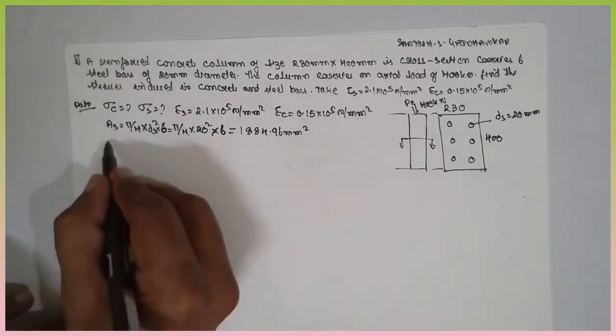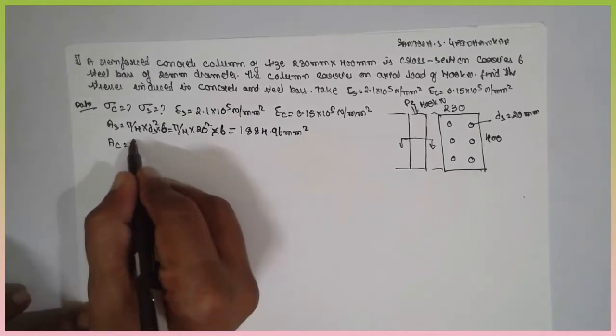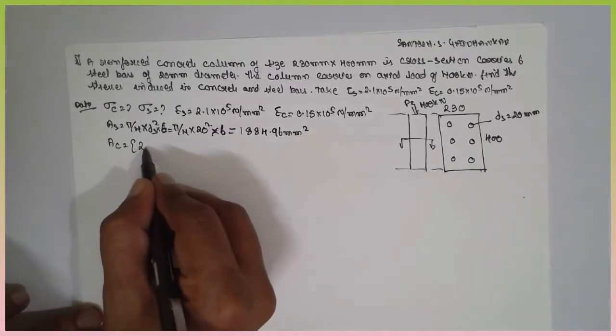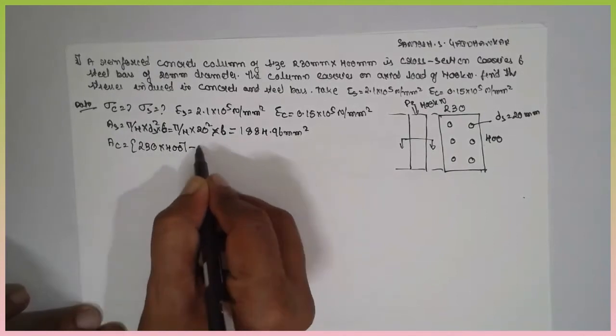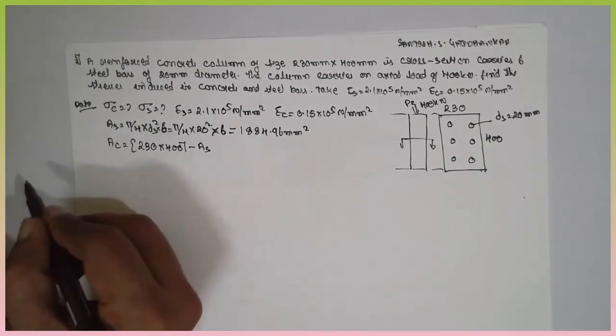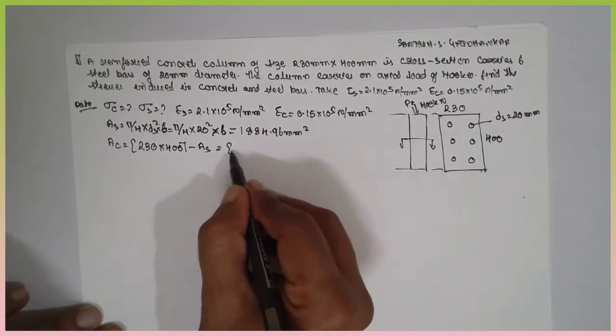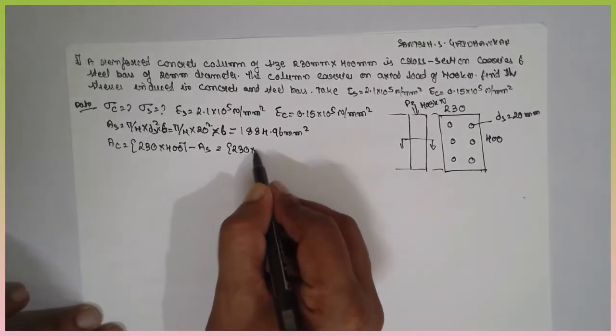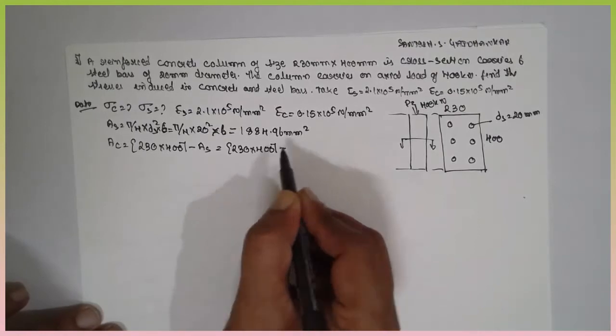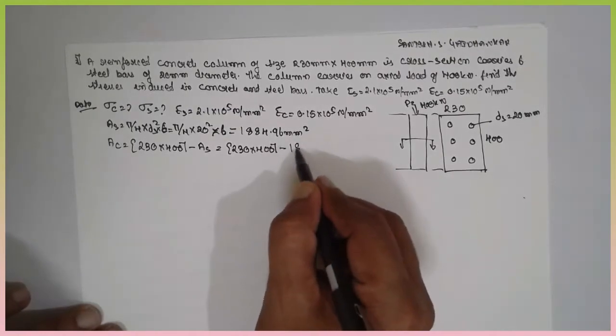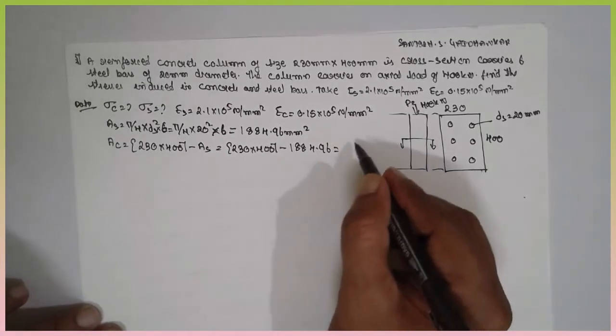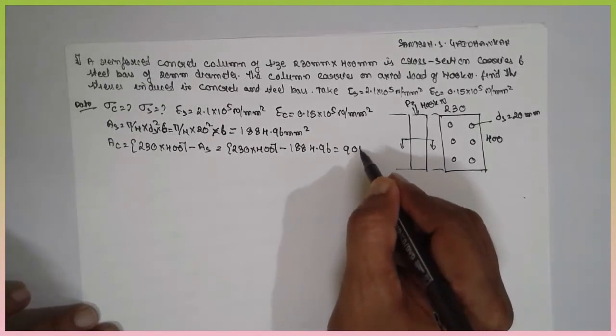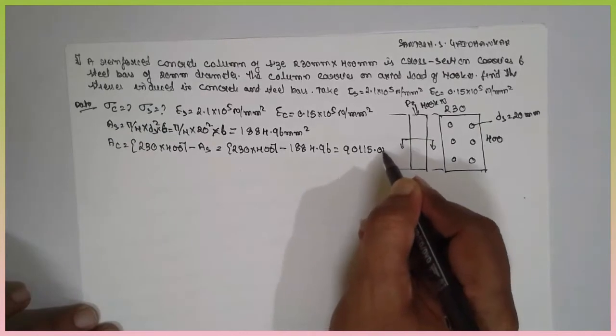Now, we are going to find out the area of the concrete. Area of the concrete 230 into 400 minus area of the steel. 230 into 400 minus 1884.96 equals 90115.04 mm square.